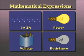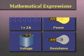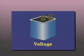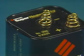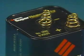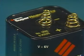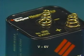Let's see how we'd properly write a voltage value in a mathematical expression. Here we have a 6-volt battery. Mathematically, its value would be expressed as V, for voltage, equals 6V, for volts. The mathematical expression uses symbols to simplify writing the value.